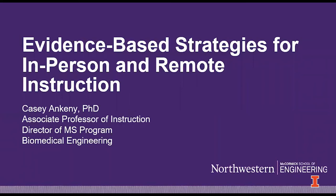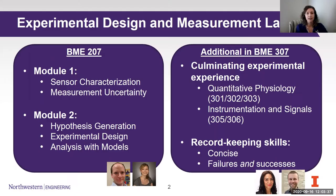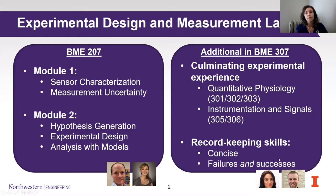I'm going to be talking about some strategies that can be applied to any type of class. I'm really going to be focusing in on our laboratory classes that we taught this spring. I'm going to talk about the one that I headed up with Professor Matt Tresh, which is BME 207, an experimental design and measurement lab. It replaces a class that was taught — 307 — a junior level class with many of the same objectives. That course was taught for the final time in spring by Professor O'Neill and Professor Rad, and we'll see some results from both of these courses.